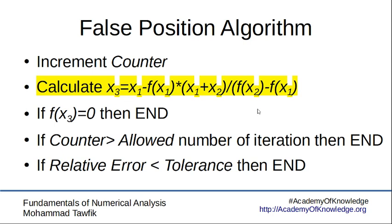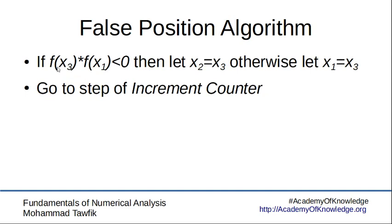But the only line that's going to be changing is the line of evaluating x3 instead of taking the average. Now we are taking kind of a weighted average, if you may call it, where we use the formula for the root of the line that we presented in the previous slide. Then we follow by checking for the termination criteria. If they are not satisfied, we go and check the value of f of x3, and then replace x2 by x3, or x1 by x3, and return to the increment counter step. So you can just see here how similar this is to the bisection algorithm.